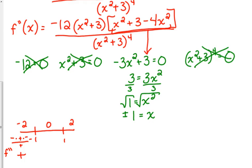At x = 0: negative 12 is negative, 0 squared plus 3 is positive, negative 3 times 0 squared is 0 plus 3 is positive, and the bottom is always positive. So one negative makes that whole thing negative. At positive 2: negative 12 is still negative, positive 2 squared plus 3 is positive, negative 3 times 4 gives the same result — that's negative — times positive, so that is positive.